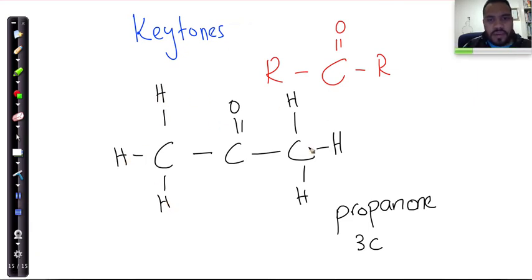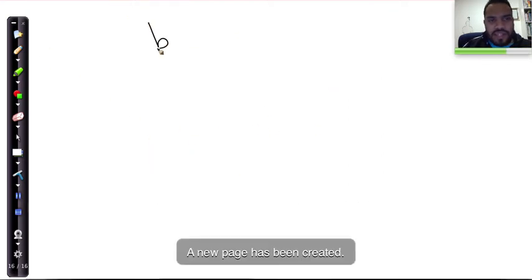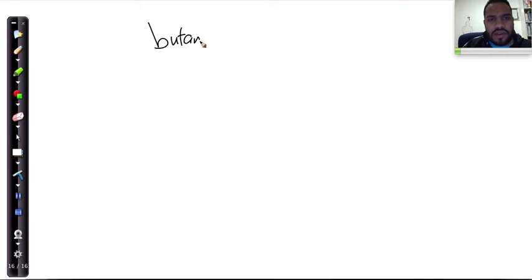This is the simplest ketone, known as propanone. So, let's look at another one. Let's look at butanone. Now, butanone is also, we don't need to say where the double-bond O is, because there's also only one possibility of butanone. It's butan-2-one, which I'm going to write over there, butan-2-one.